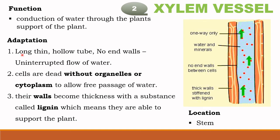Xylem vessel adaptation: if you look at this picture, you can see it looks like a hollow pipe. It is a long, thin, hollow tube with no end walls, allowing an uninterrupted, unidirectional flow of water. These cells are dead because a chemical called lignin destroys all the internal contents, forming a large hollow structure. Lignin also helps to support the plant. The function of the xylem vessel is to conduct water through the plant and provide support, and it is located in the stem.